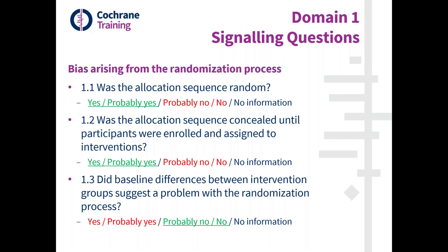The third question is: do baseline differences between intervention groups suggest a problem with the randomization process? Note the wording of this third question carefully — it is not asking whether there was any baseline imbalance, because there nearly always will be some imbalance due to chance. It is asking whether there was substantial imbalance that provides evidence that the randomization process was problematic. Many users of the old tool added baseline imbalance as an additional domain and misinterpreted it, and unfortunately many users of the tool now still misinterpret this question.